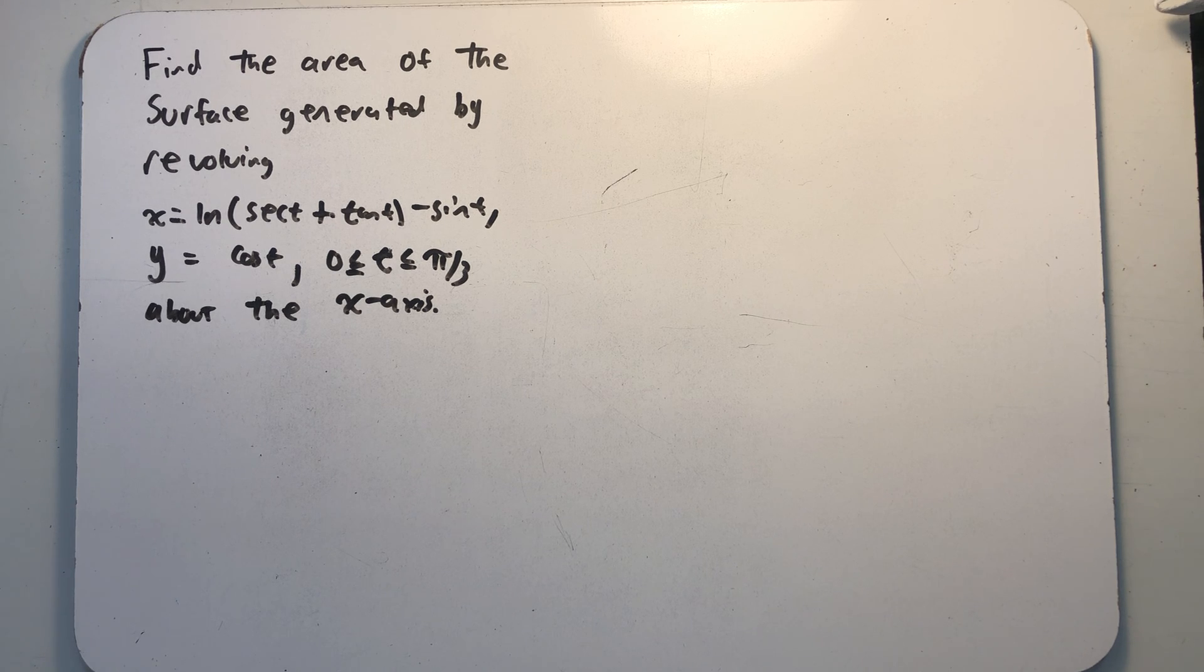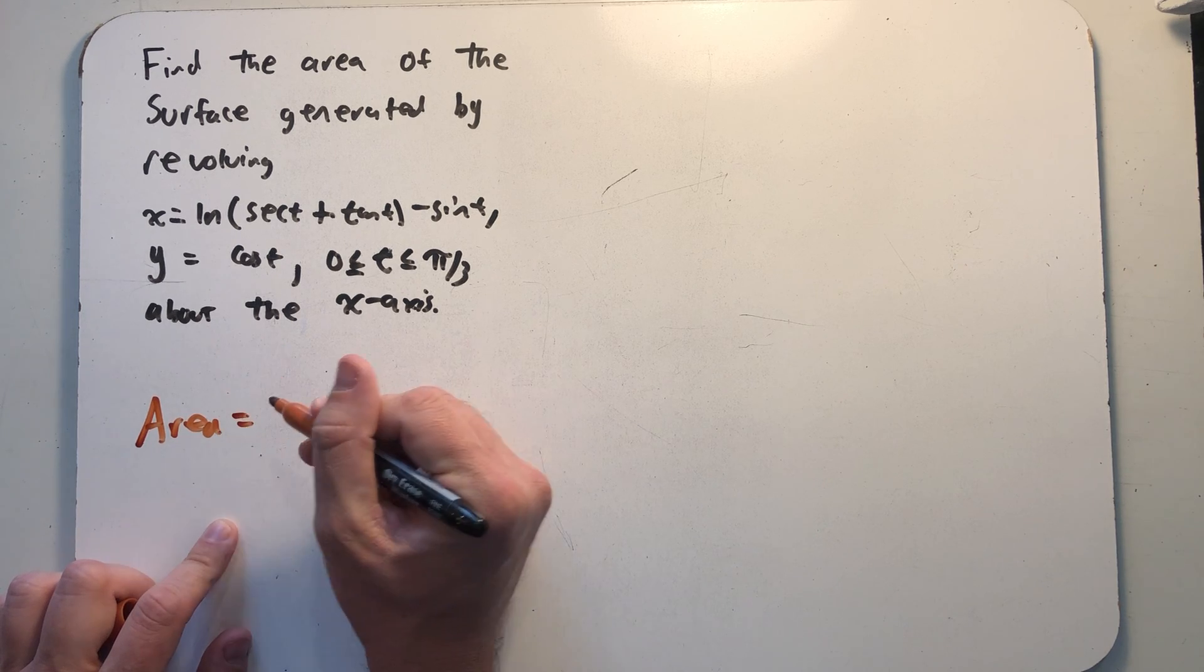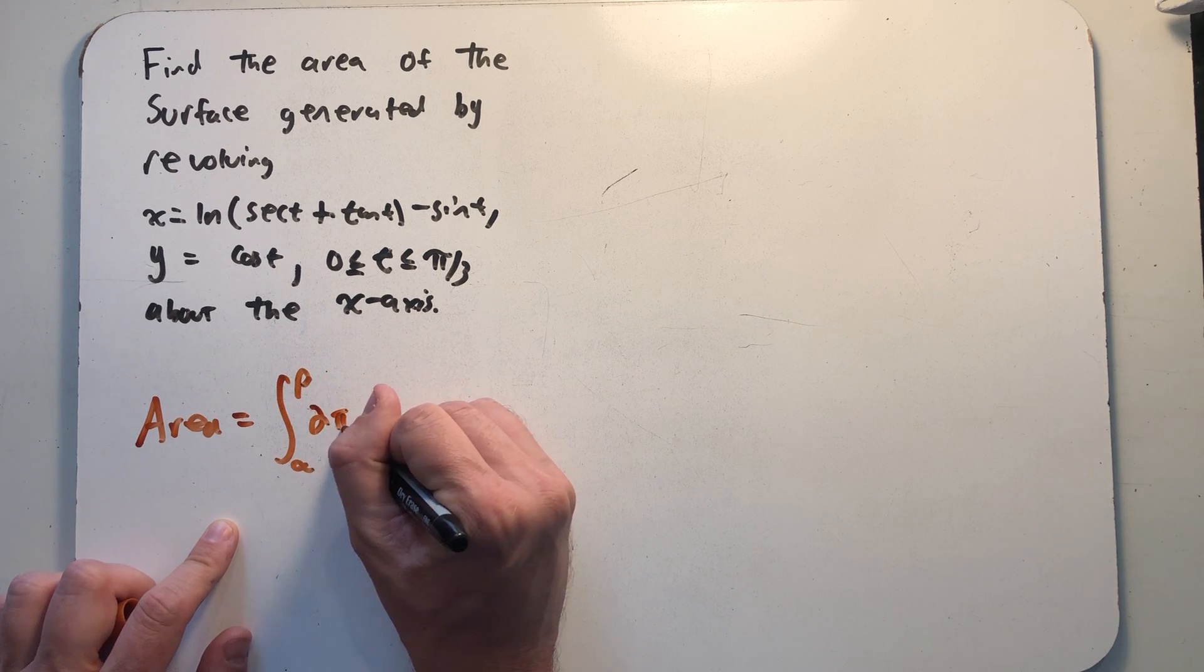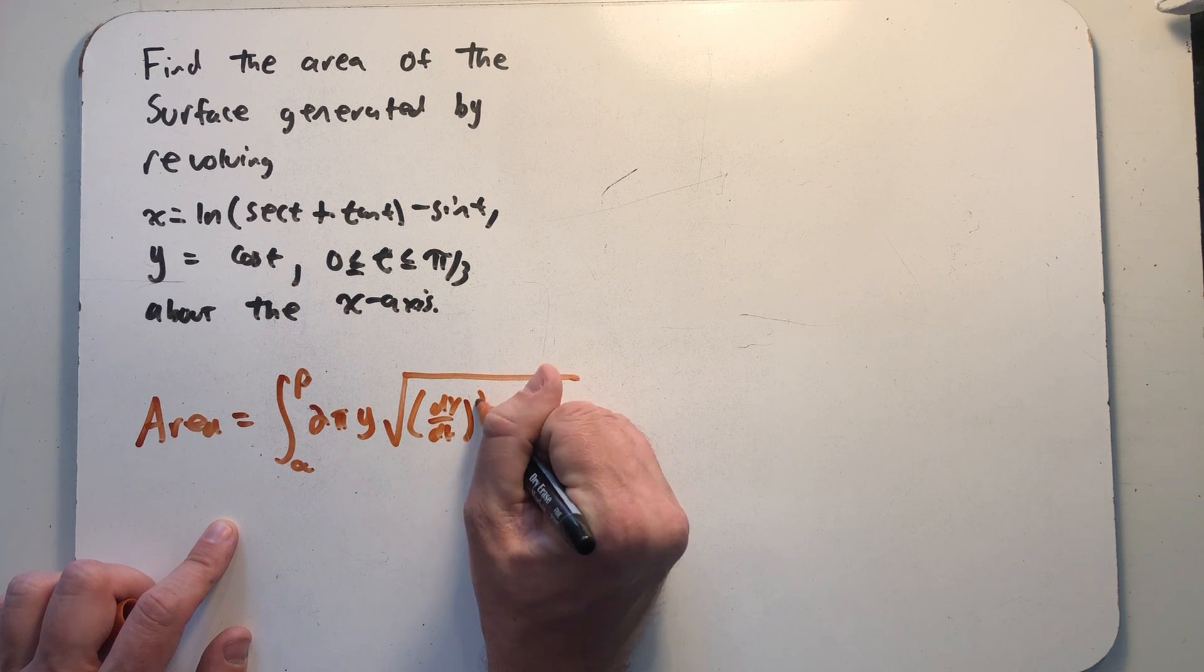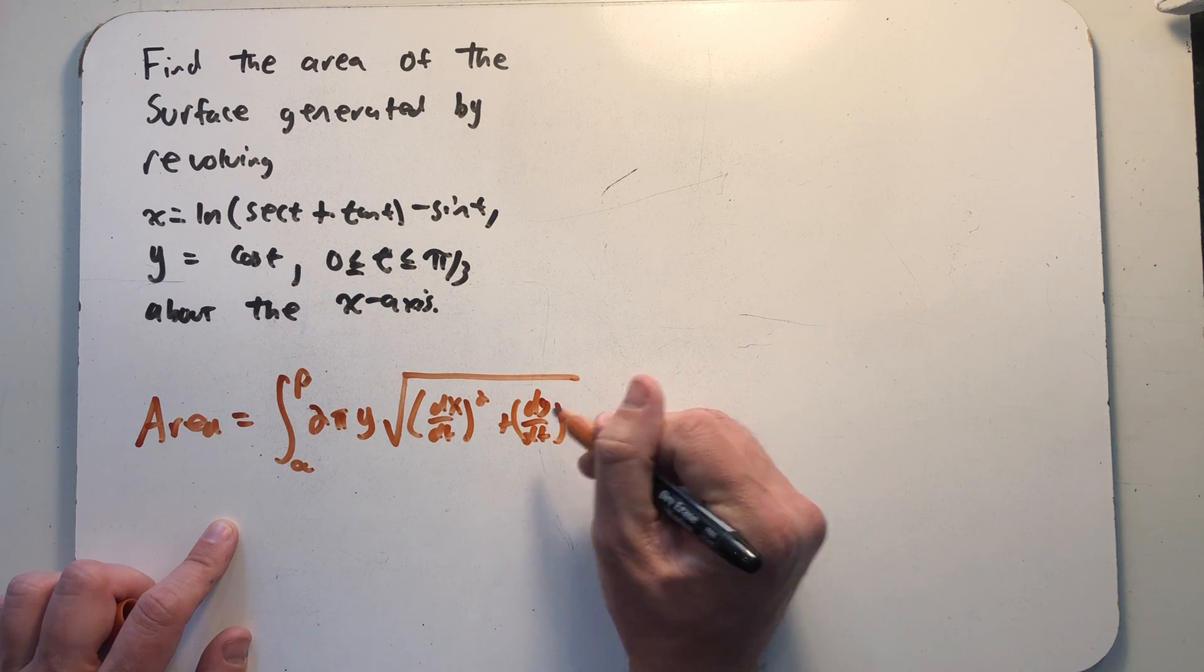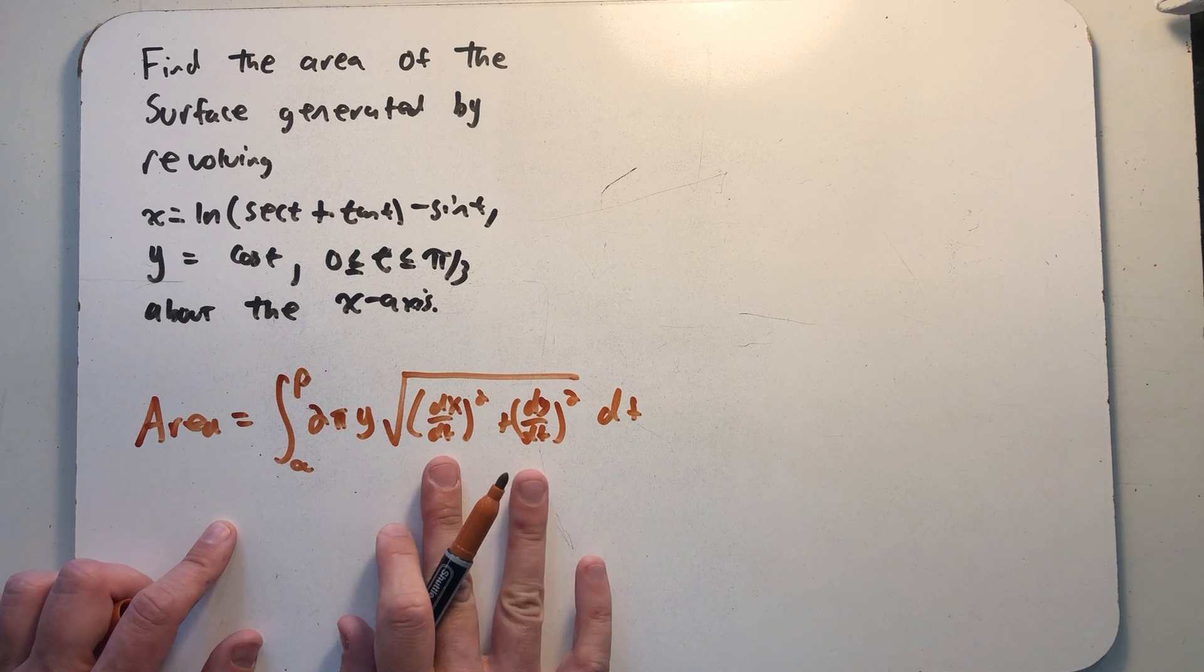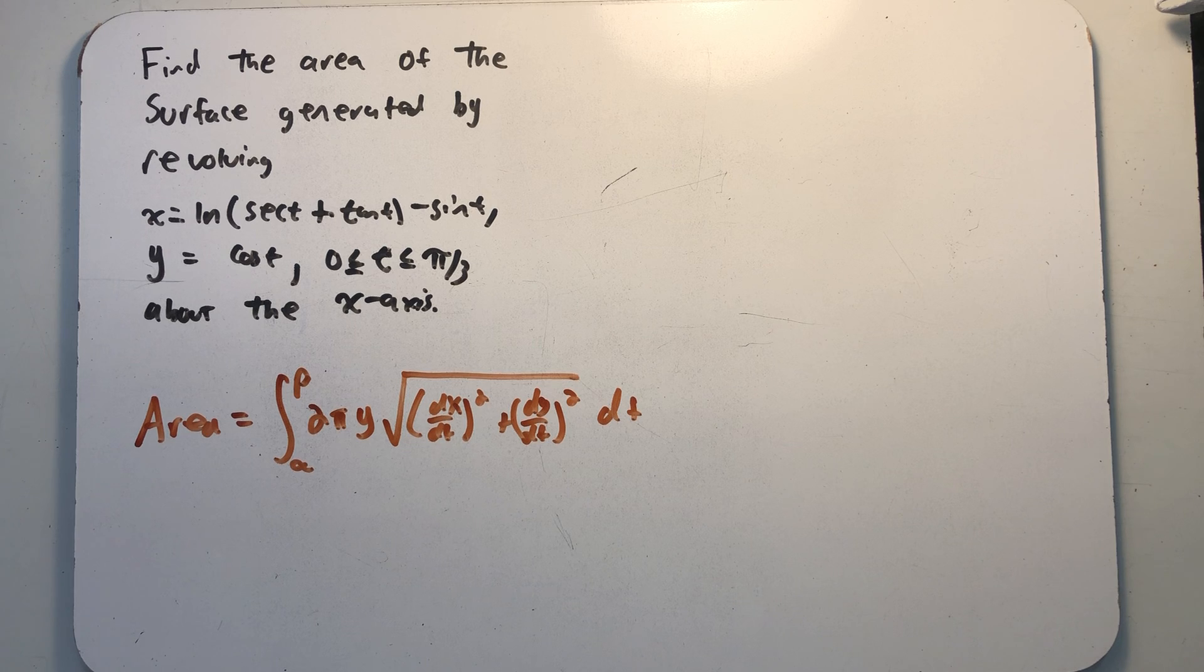We're revolving something around the x-axis, and we have a formula we get to use. The area here is equal to an integral from alpha to beta of 2 pi y times the square root of that formula we know from our arc length calculations. We derived this earlier in our course. Right away, I know what I'm going to plug in for y. I'll have to do some work to find what to plug in for dx/dt and dy/dt, and then we'll take it from there.